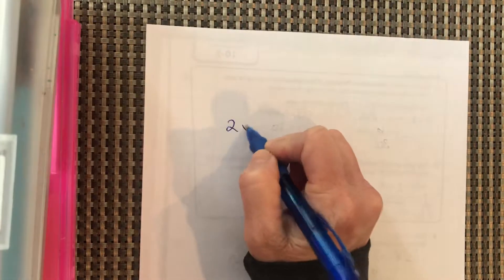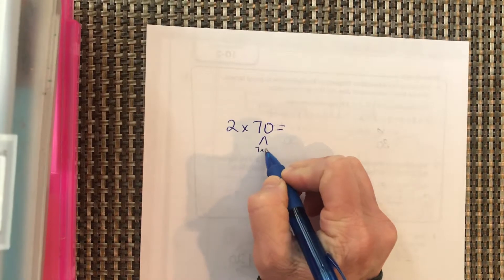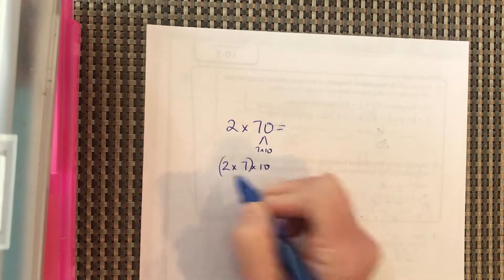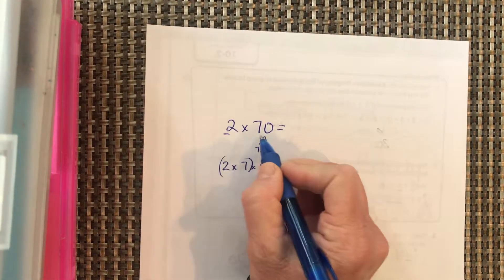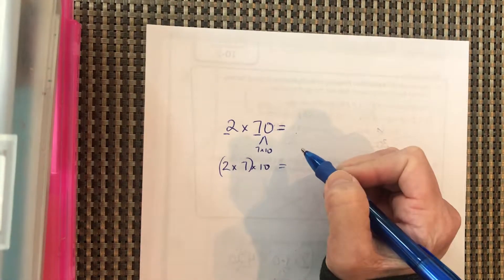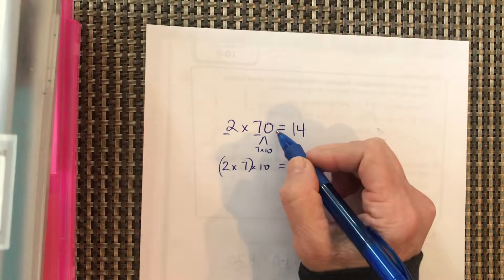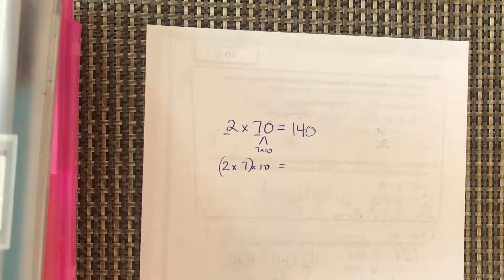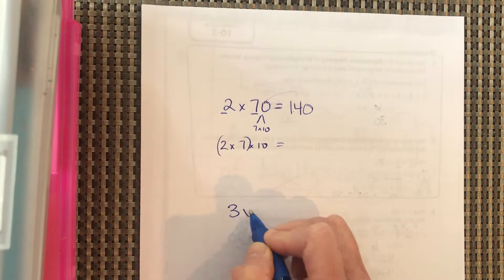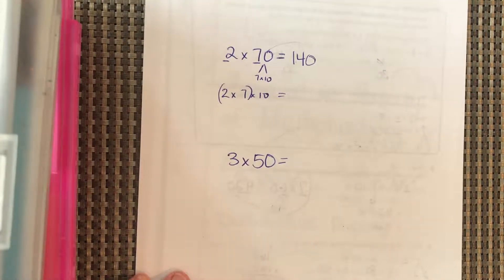Let's do 2 times 70. Since 70 equals 7 times 10, we have 2 times 7 times 10. Two times 7 equals 14, and 14 times 10 — just bring the zero over — is 140.